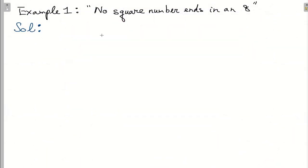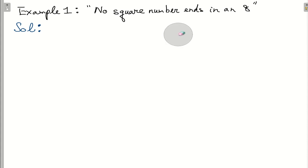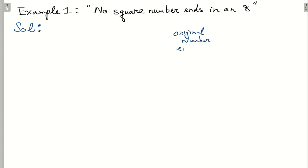Let's see another example. Here we want to prove that there is no perfect square number whose last digit (units digit) is 8. For example, if we take the number 11 and square it, we get 121, whose last digit is 1. We want to prove that no number, when squared, gives a result ending in 8. To do this we will draw a table showing the original number's last digit and the last digit of its square.